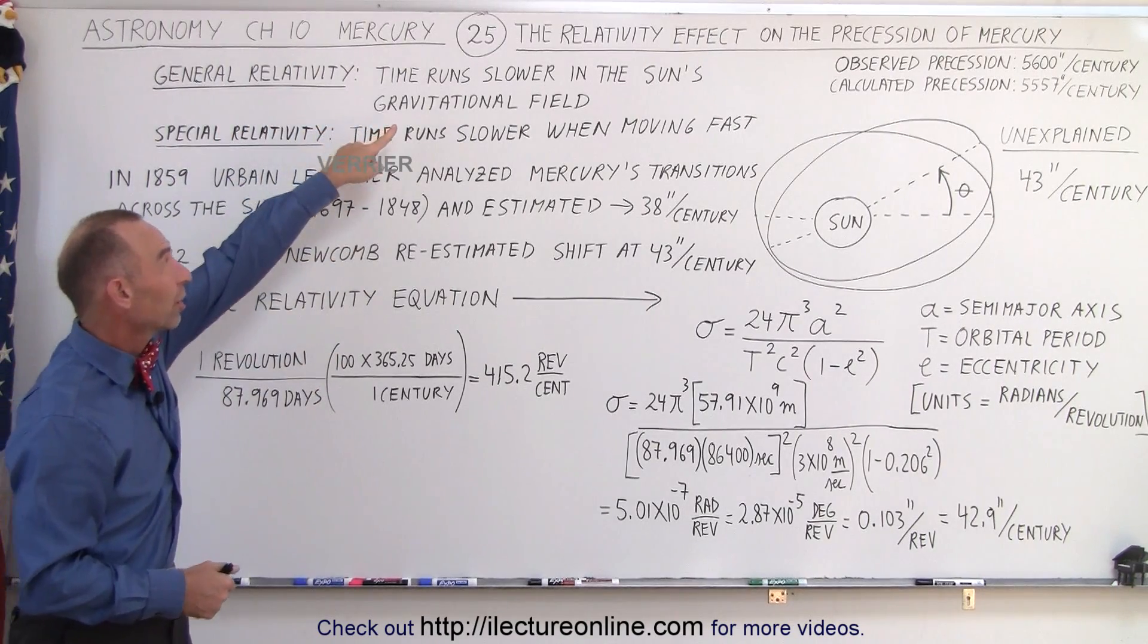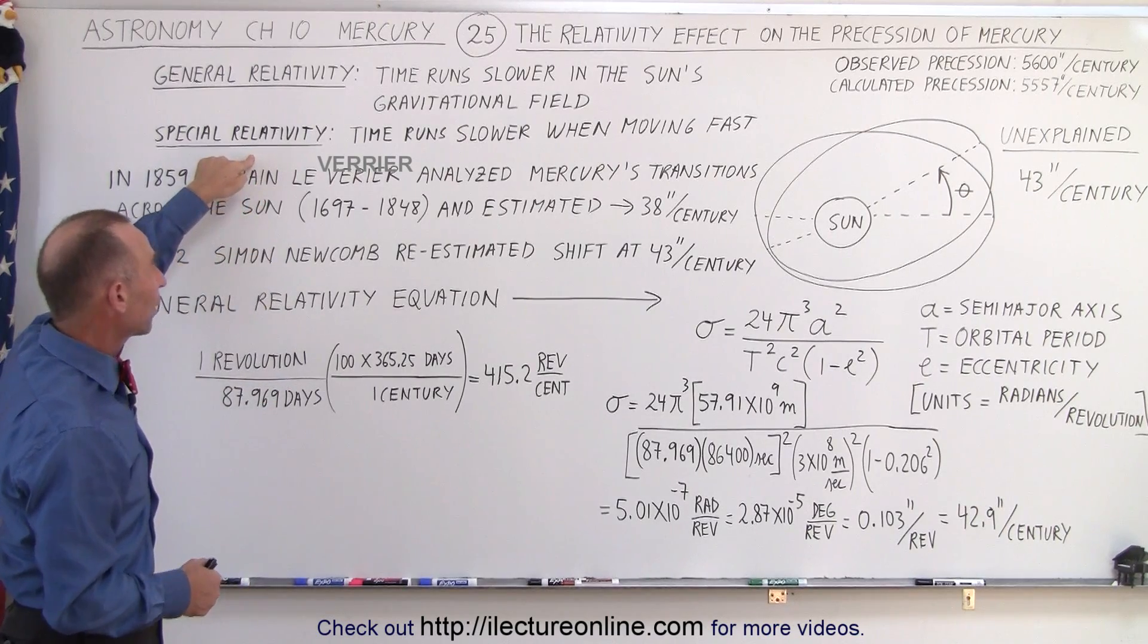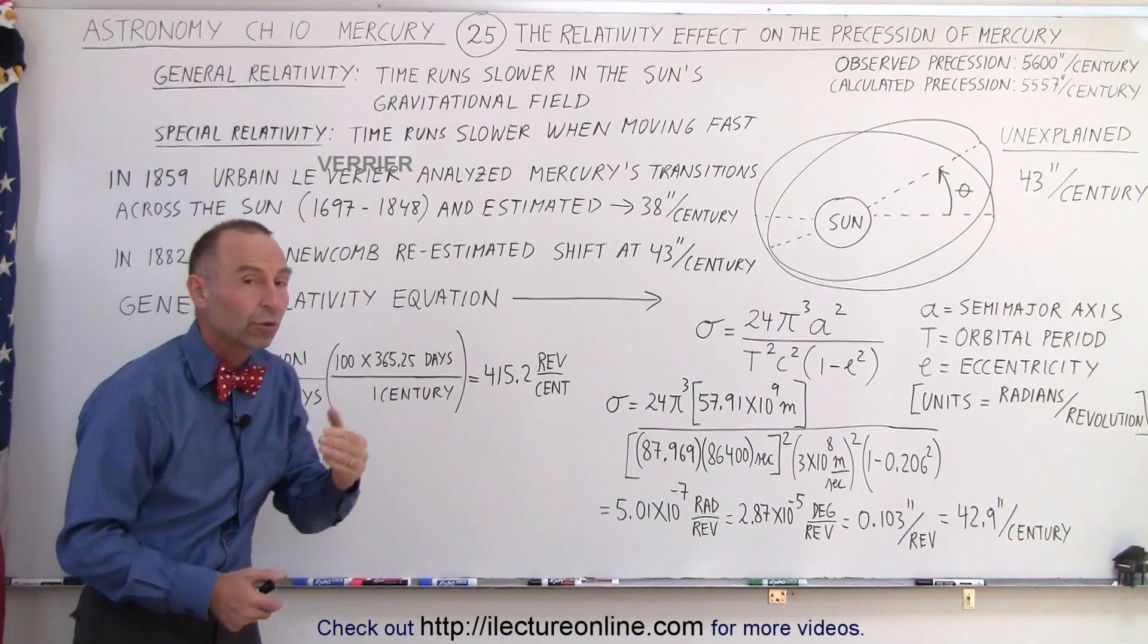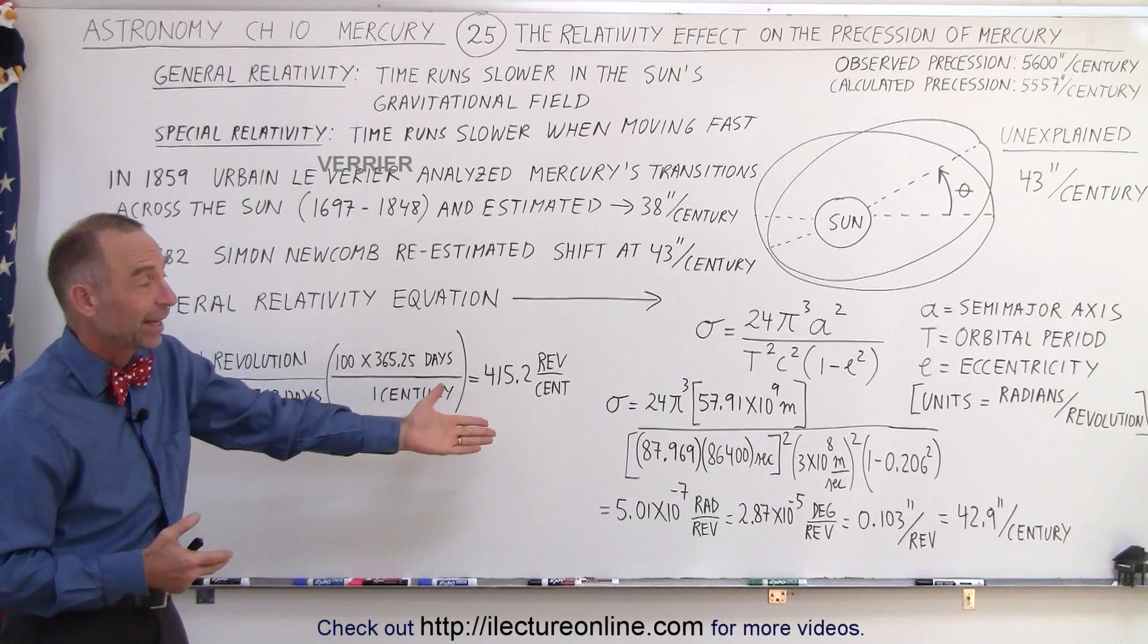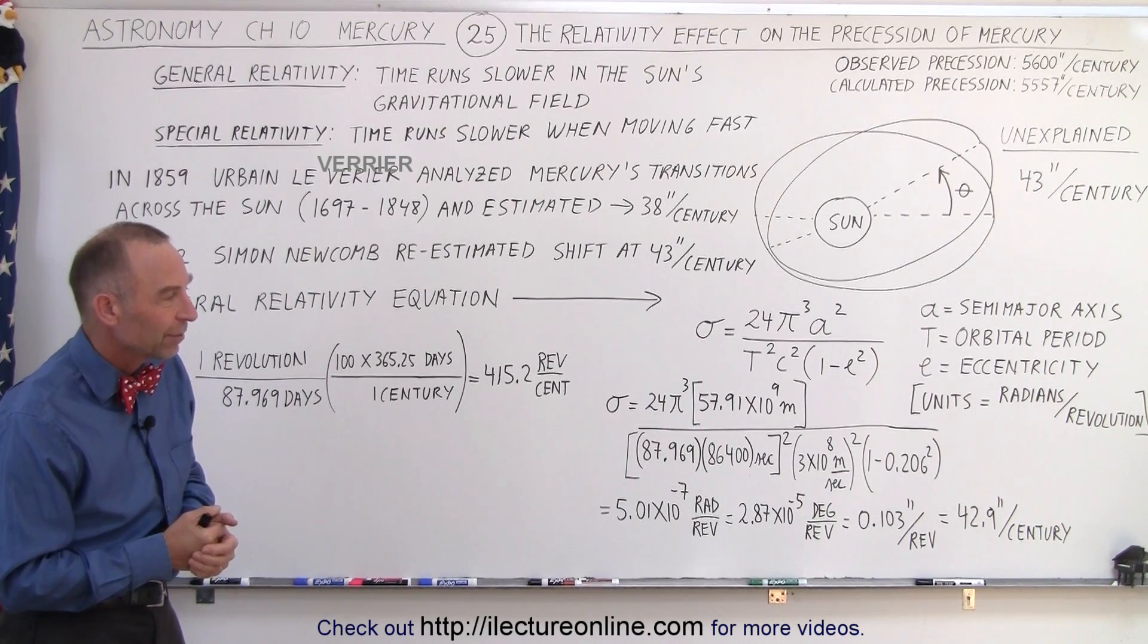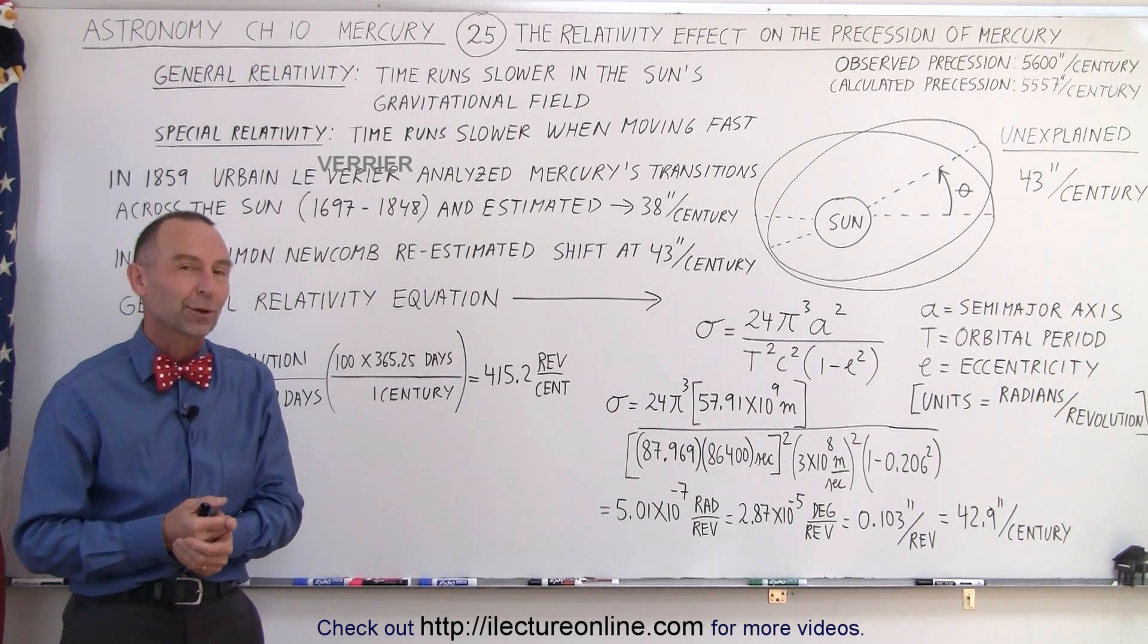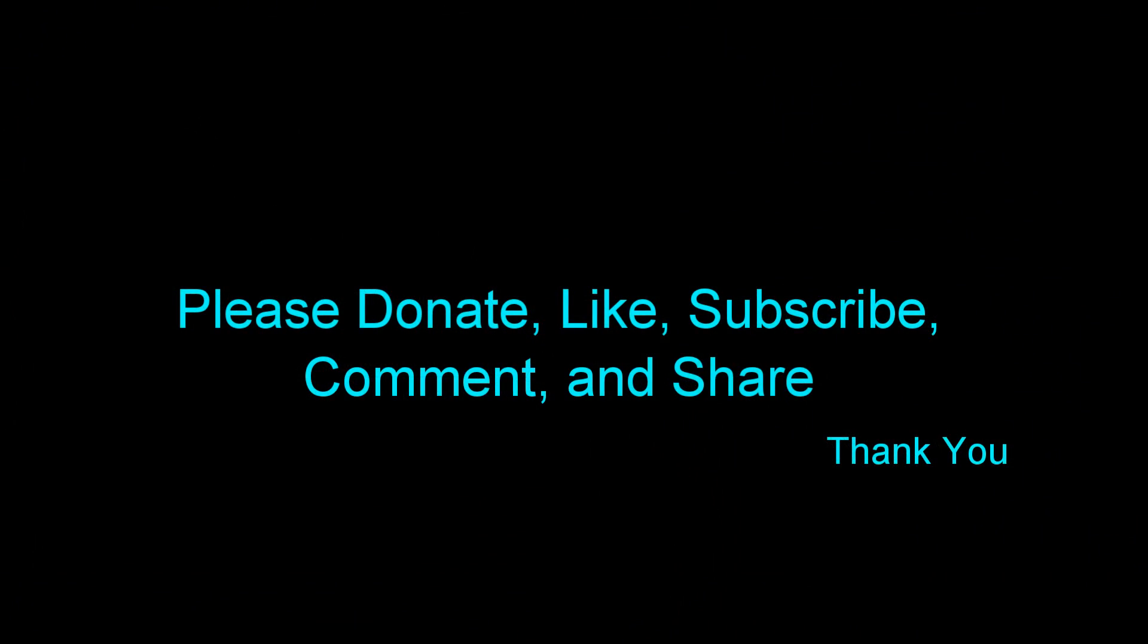We have to take into account also the relativity effects due to the general relativity which causes time to slow down in a strong gravitational field of the Sun and the special relativity which causes time to run slower for objects like Mercury that move very fast. And this is the result, that's how they proved the theory of relativity using the precession of Mercury.